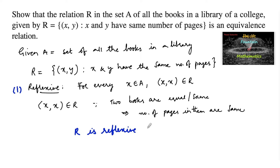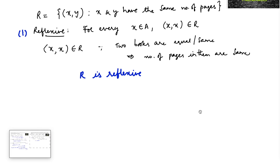A simple concept: equal books have equal number of pages, so it is reflexive. And coming to the second property: symmetric.